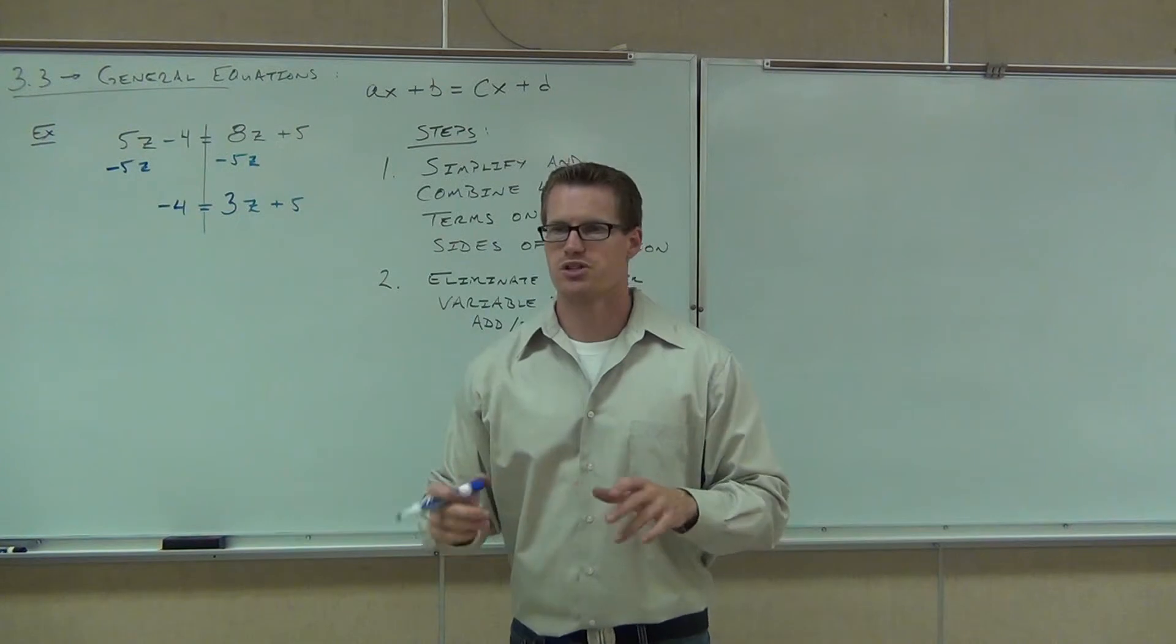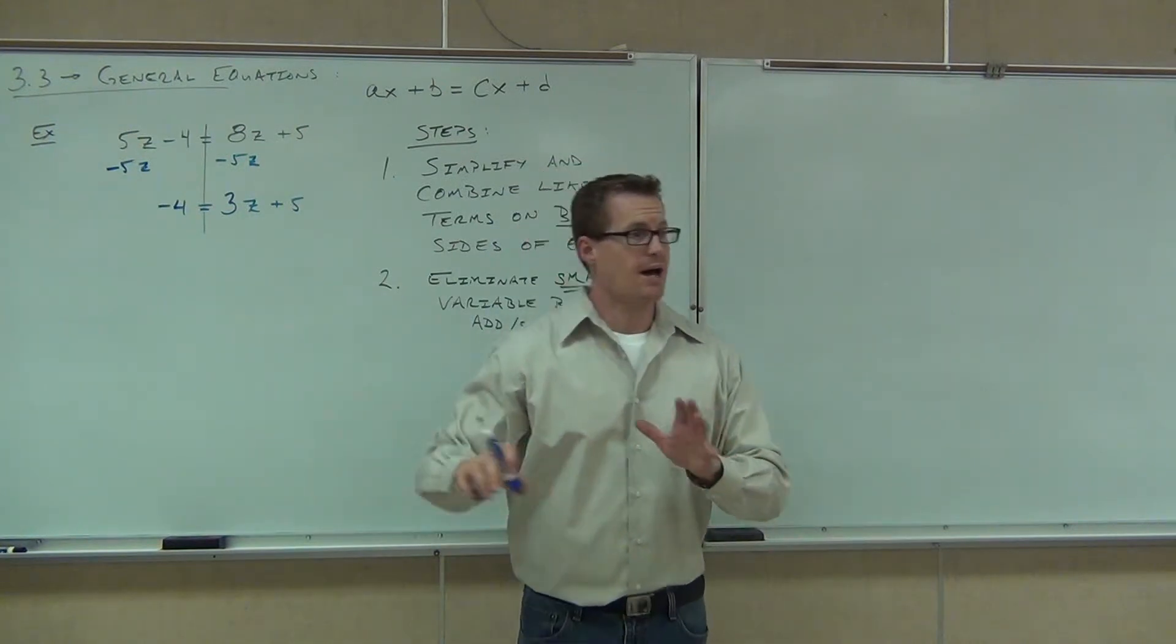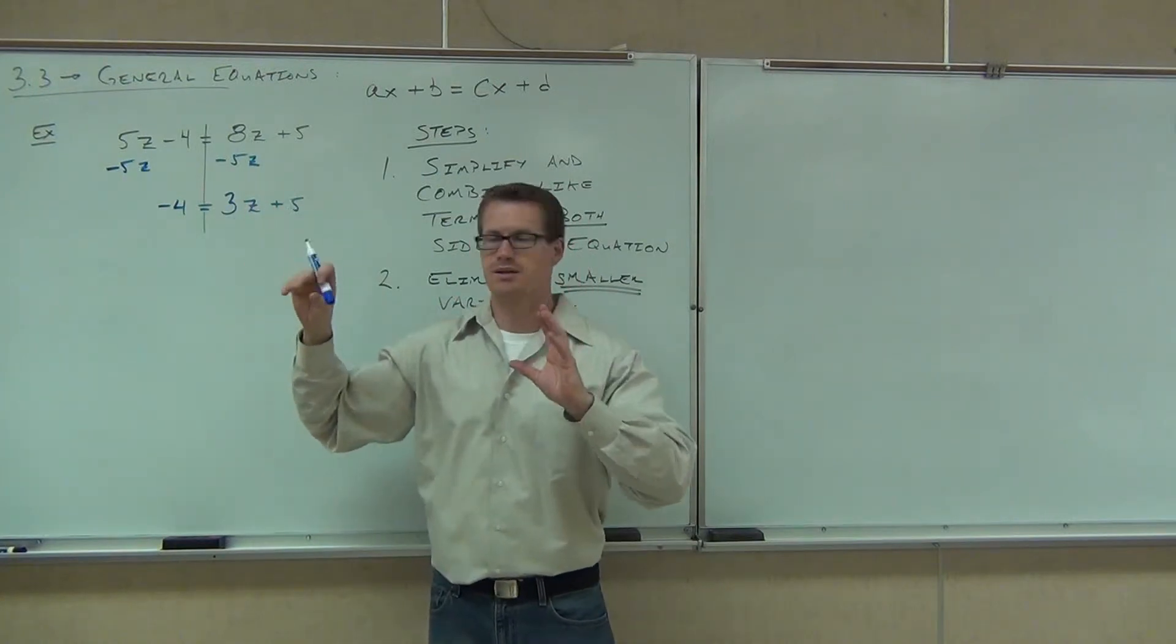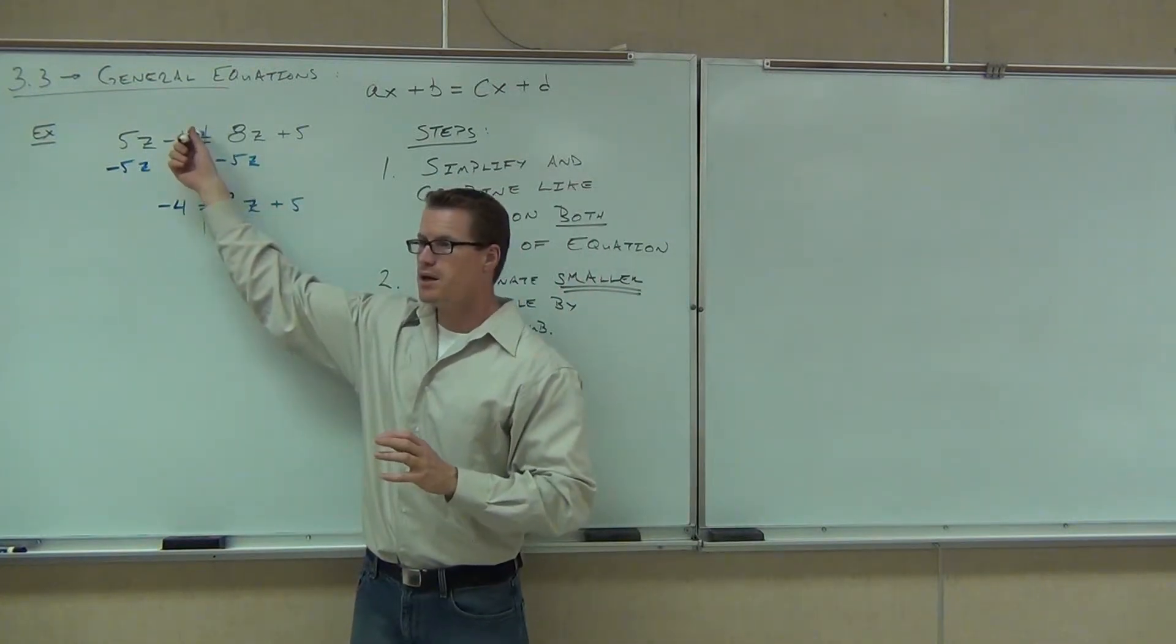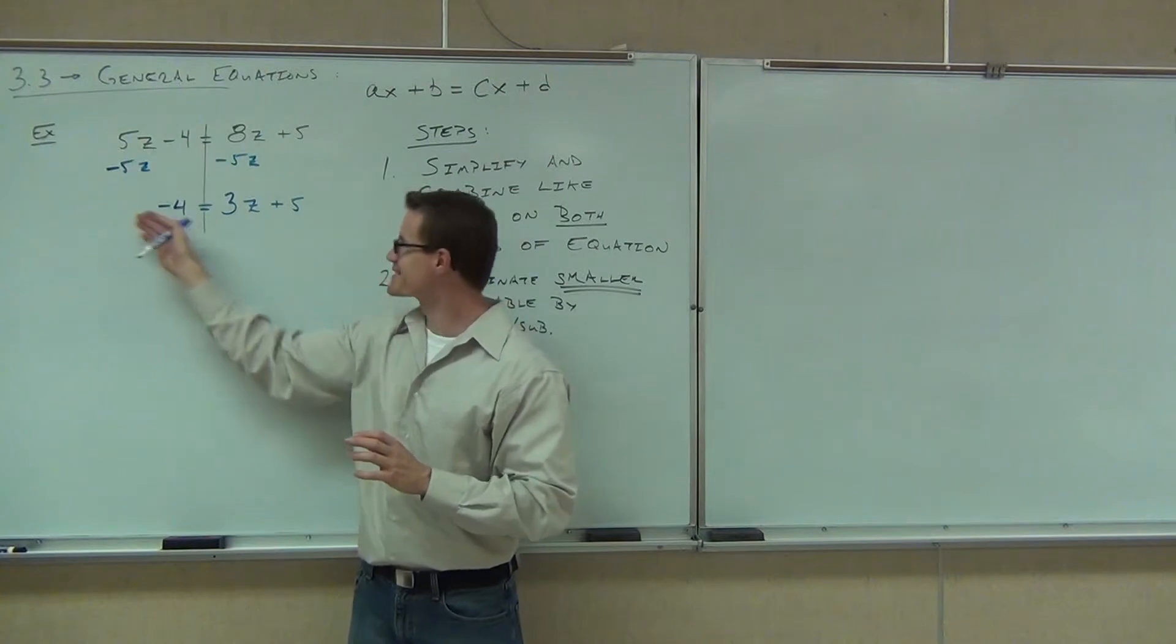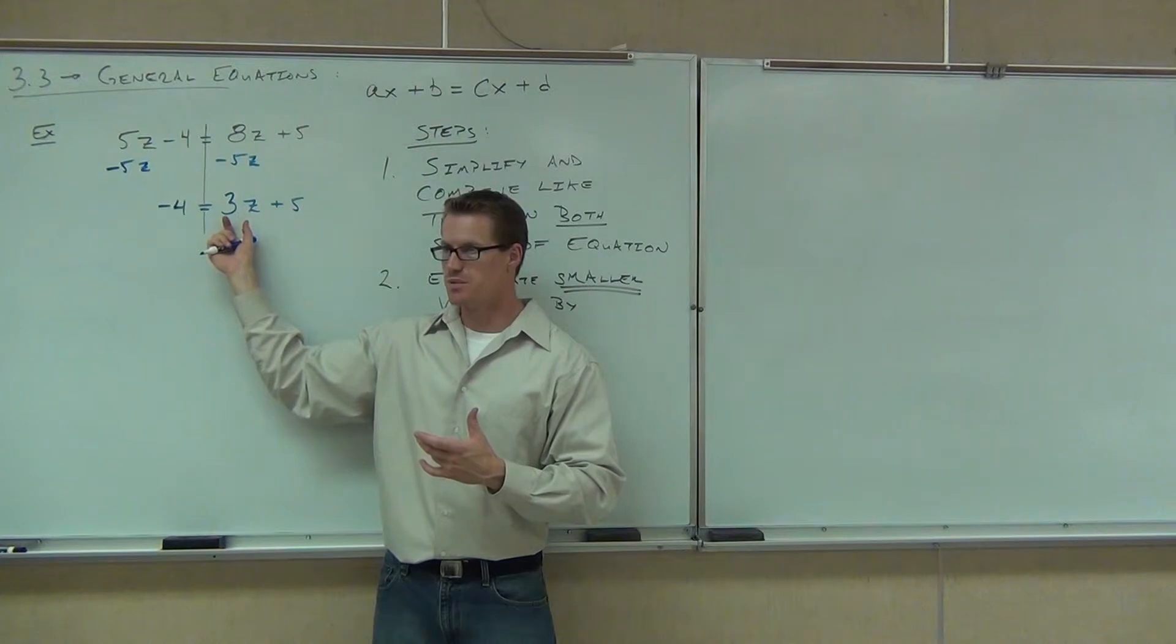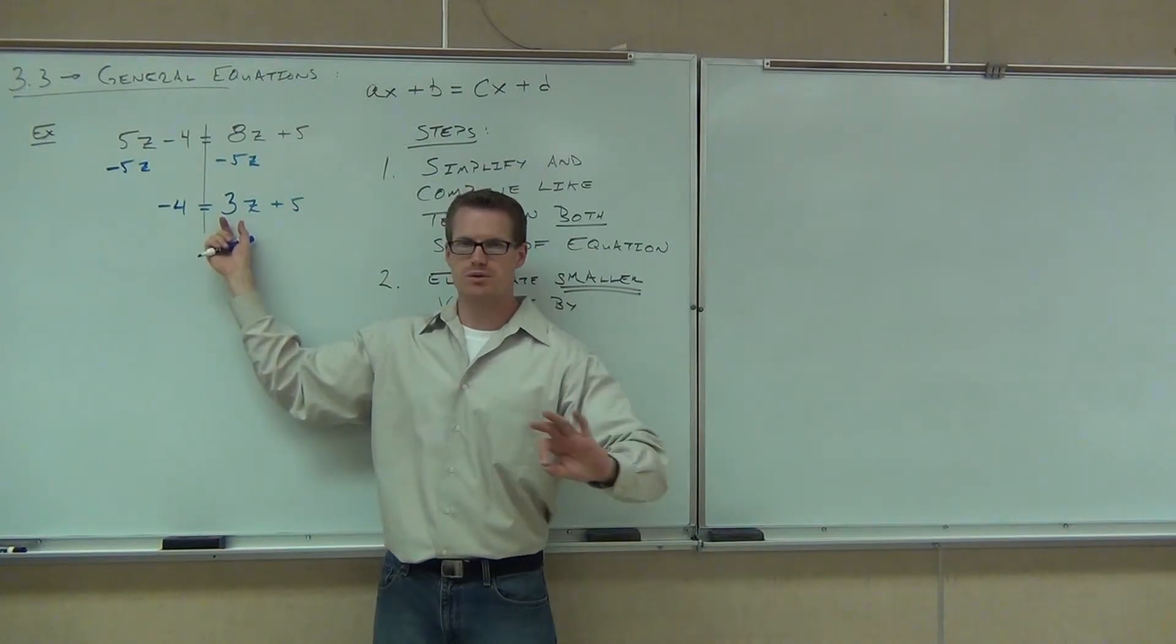As soon as we get rid of our smaller variable, you're going to have something like this. The equations are going to look the same every single time. You're going to get something where now you only have one variable, but it might be surrounded by some numbers. Now is the part where we get rid of those numbers.